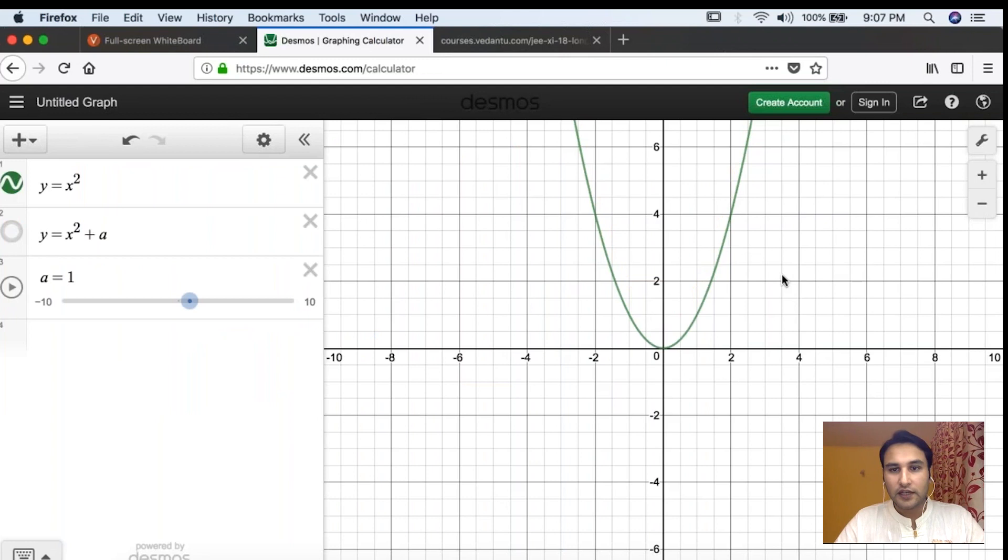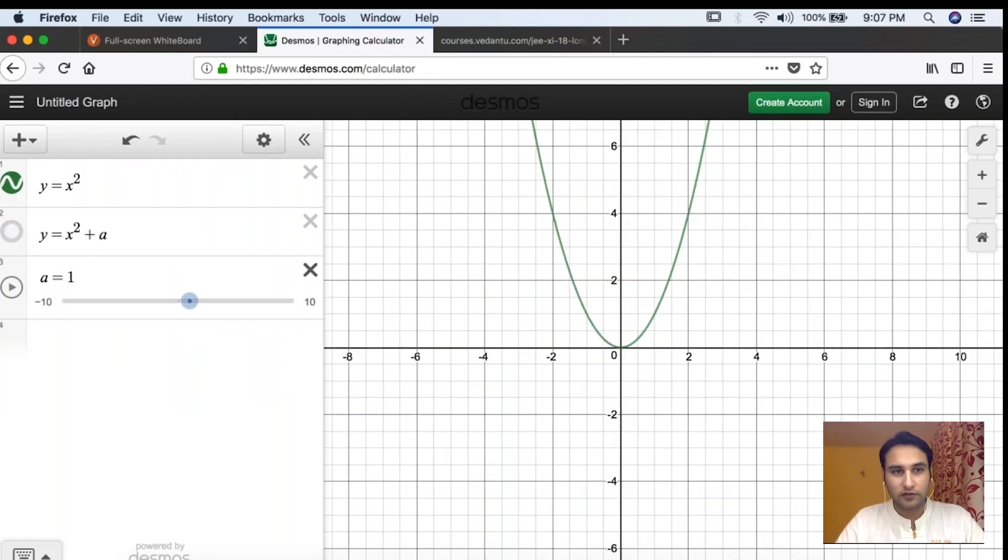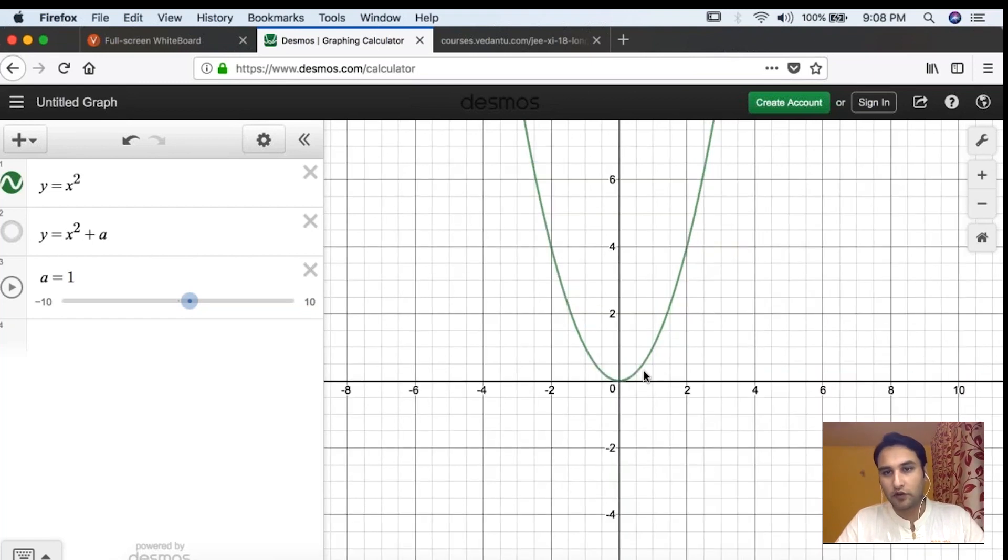All of you can see this is the graph of y = x² which we plotted earlier. This shape is what we call parabolic shape. We call this shape quadratic or parabolic shape. Now I'm going to transform it by adding 'a' to it.